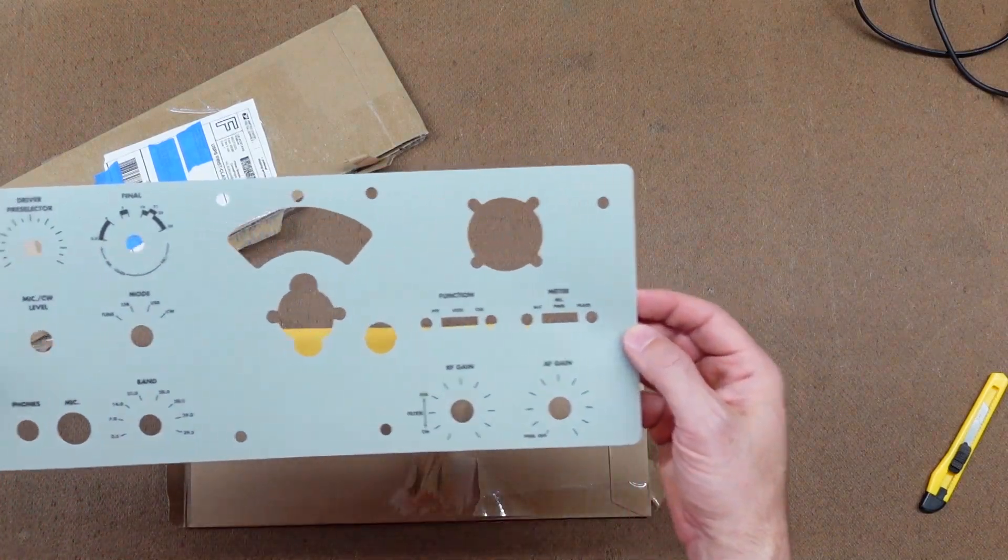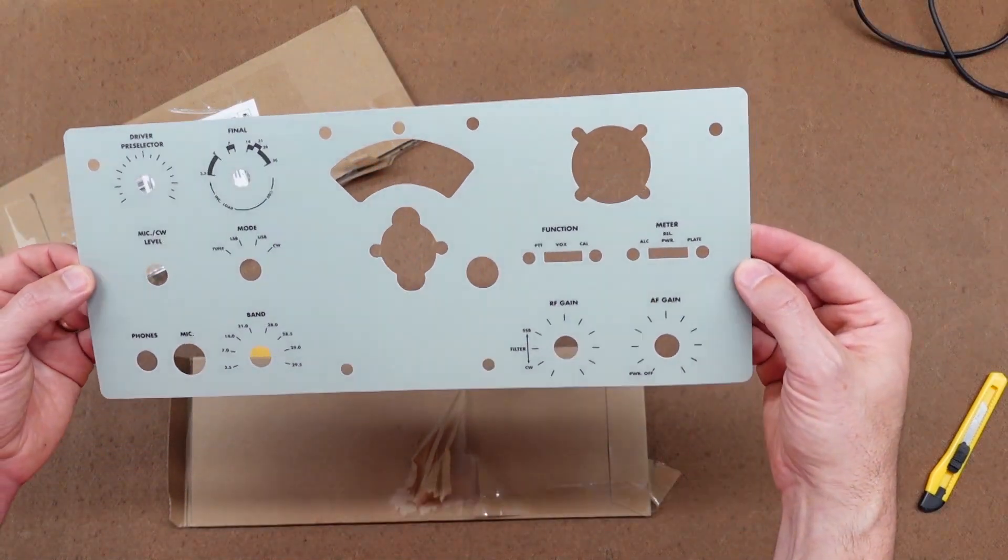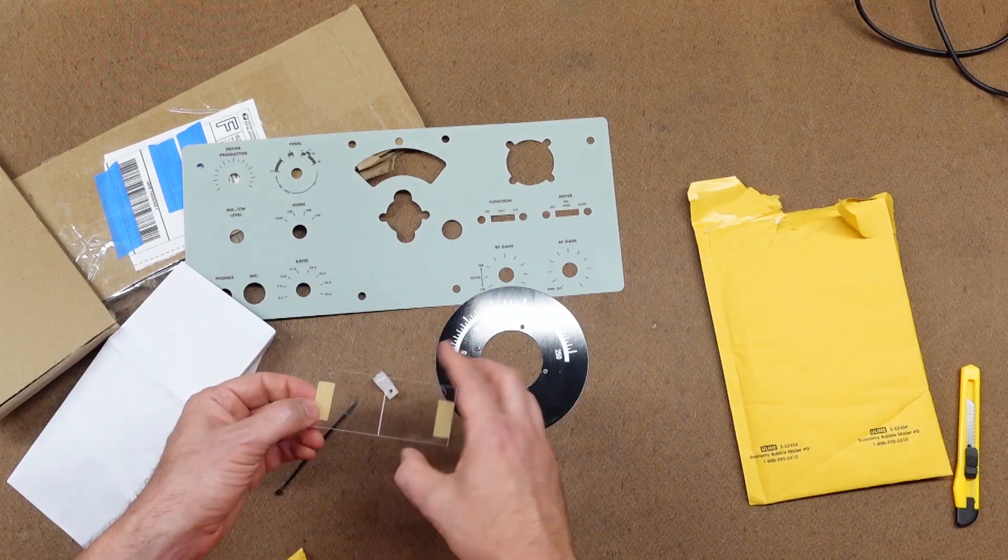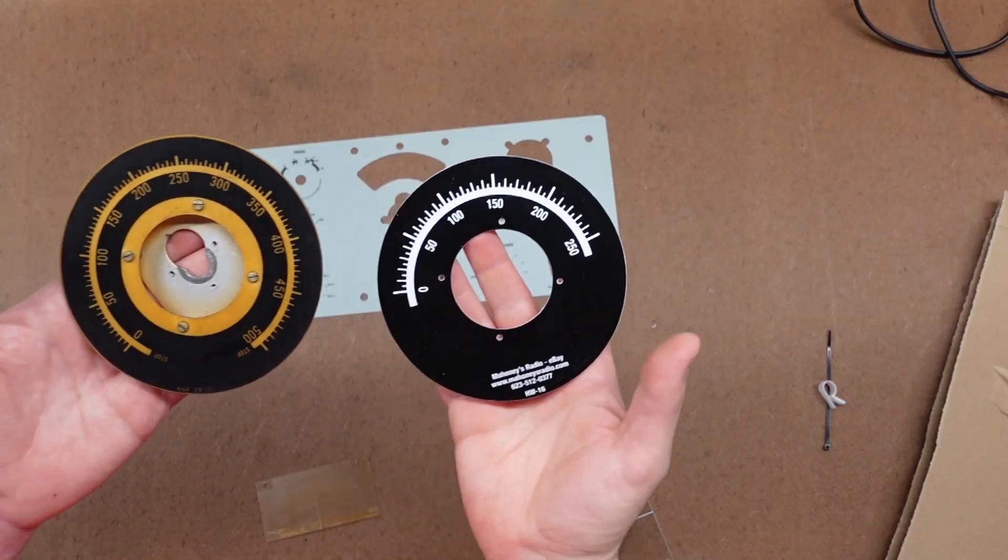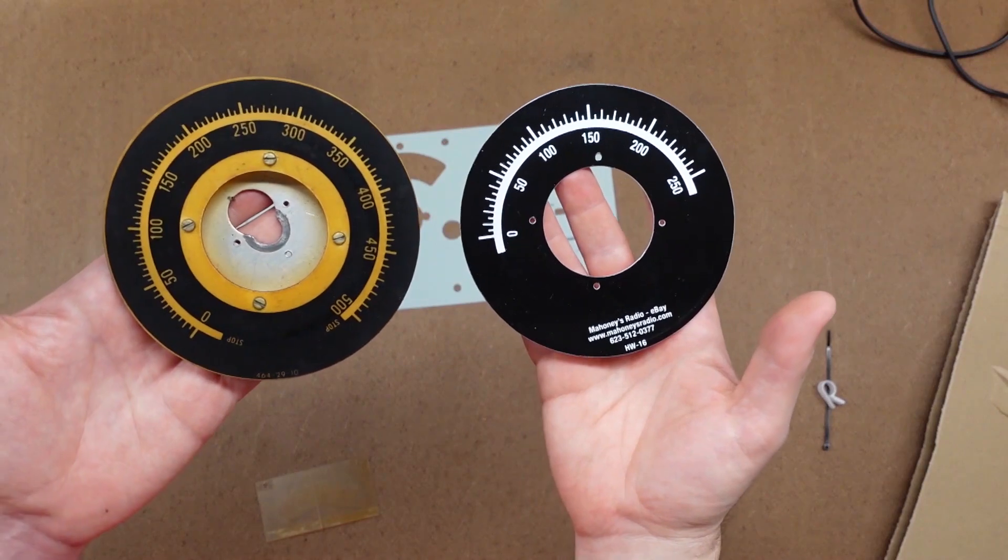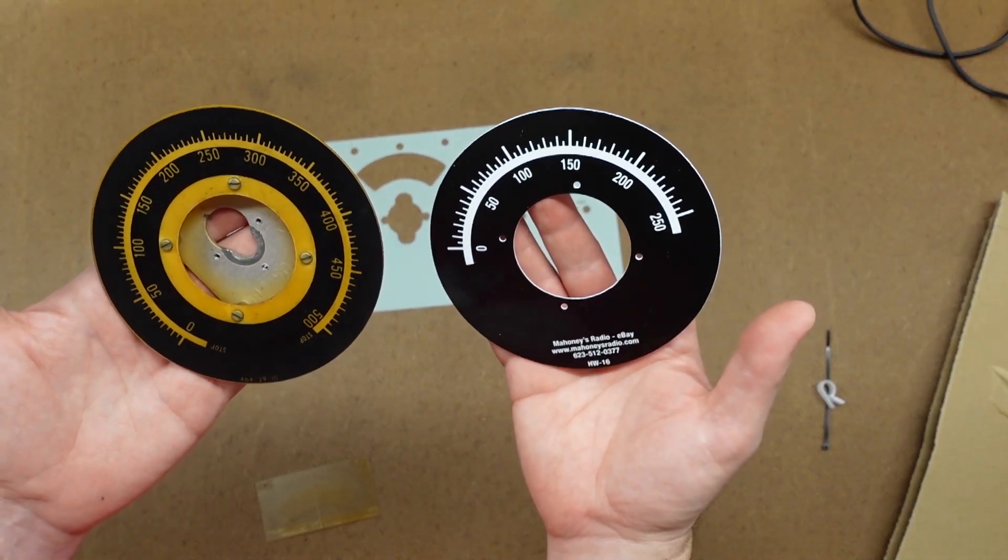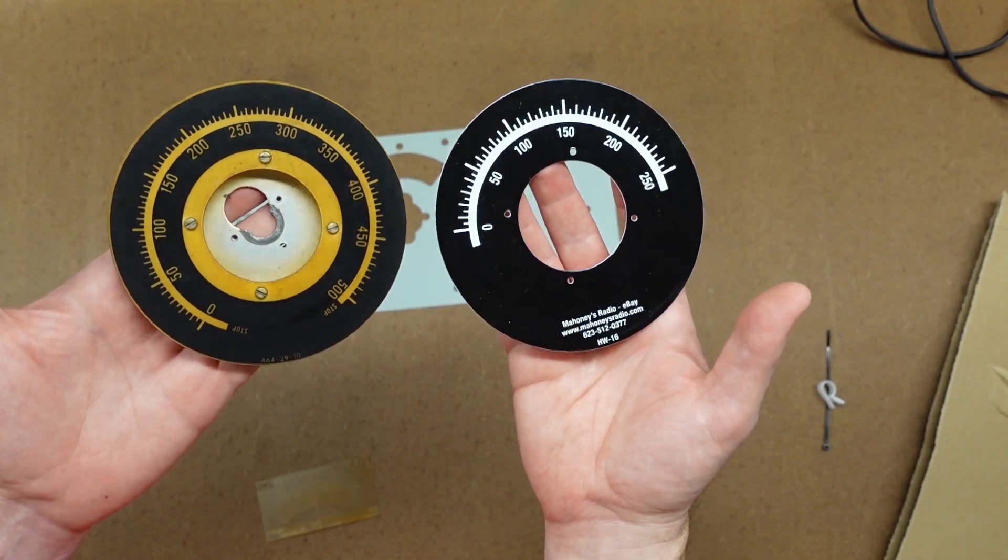I also got a replacement dial window because the original was permanently yellowed. But I made a mistake and ordered the wrong replacement dial. This one's apparently for the HW100, and it has completely different gradations. Oh well, I'll just keep the original.